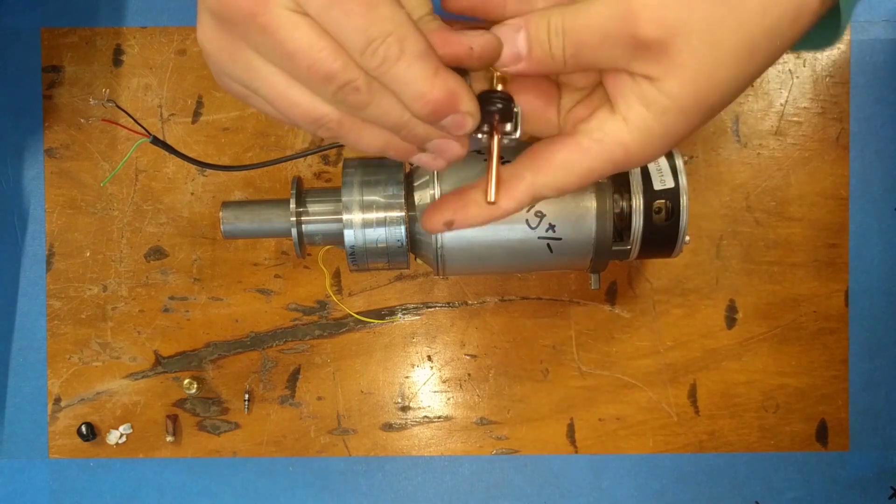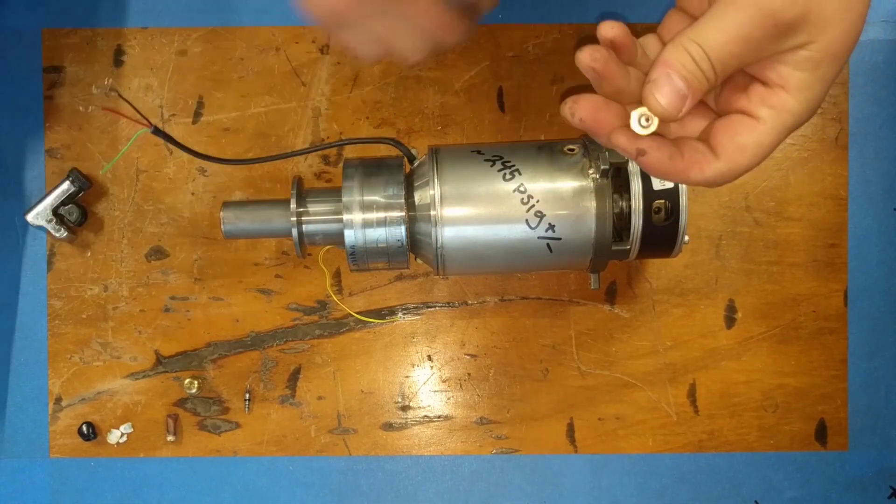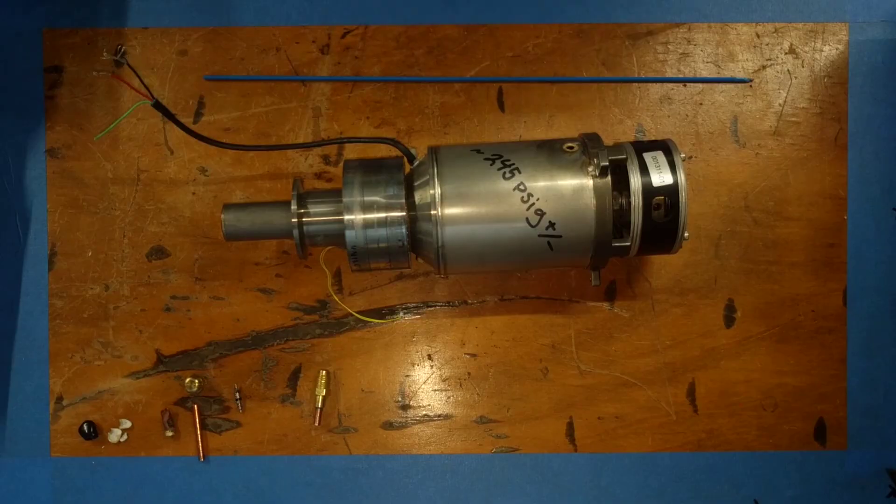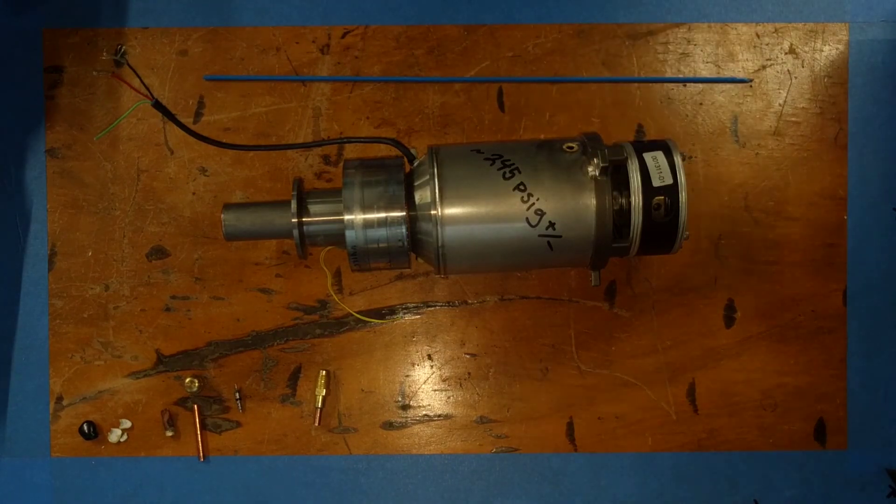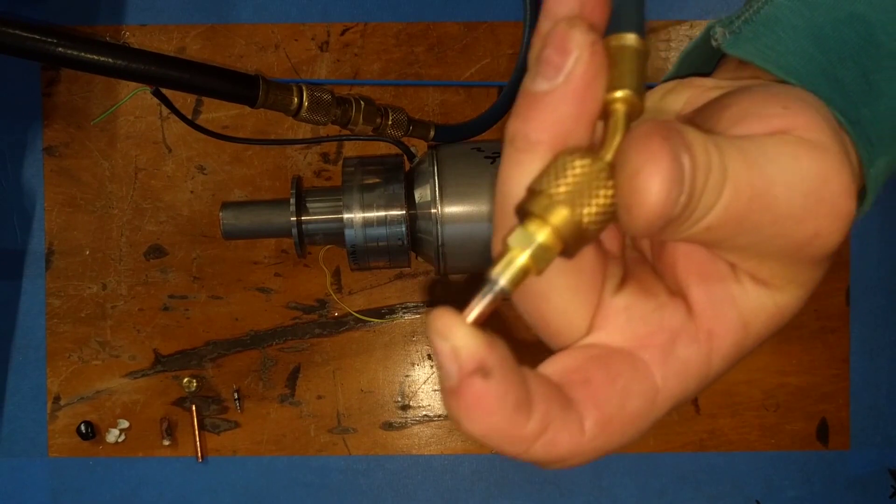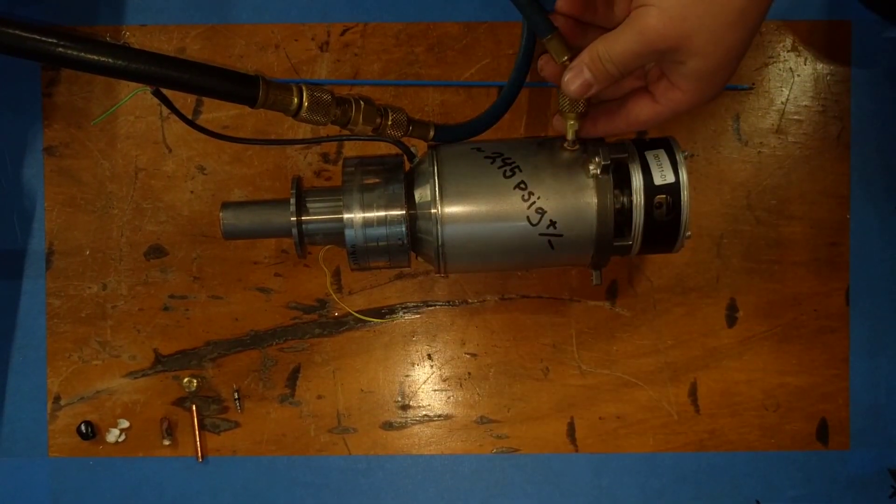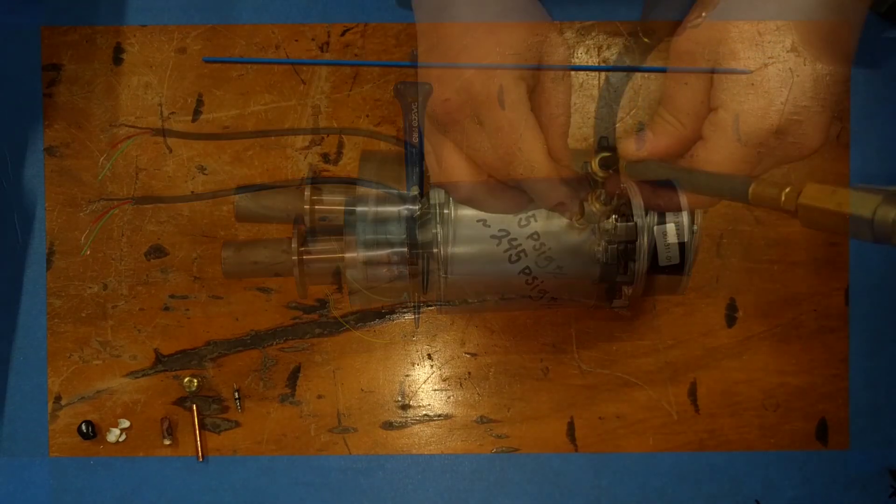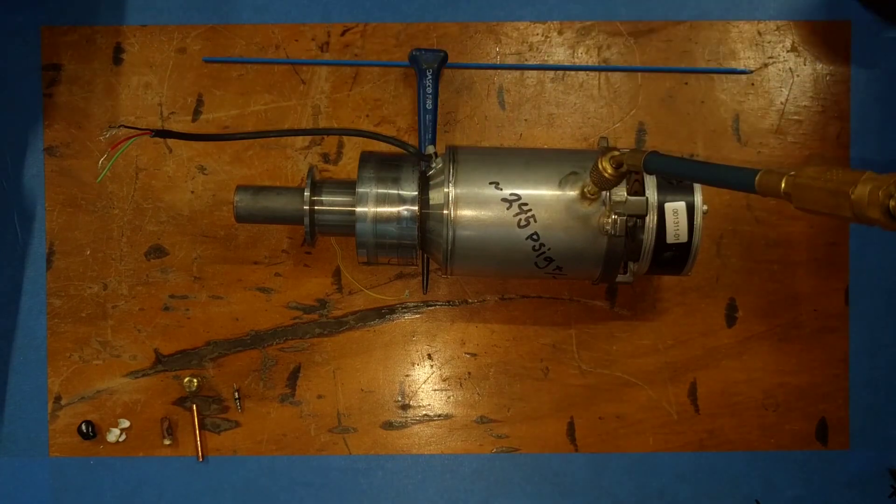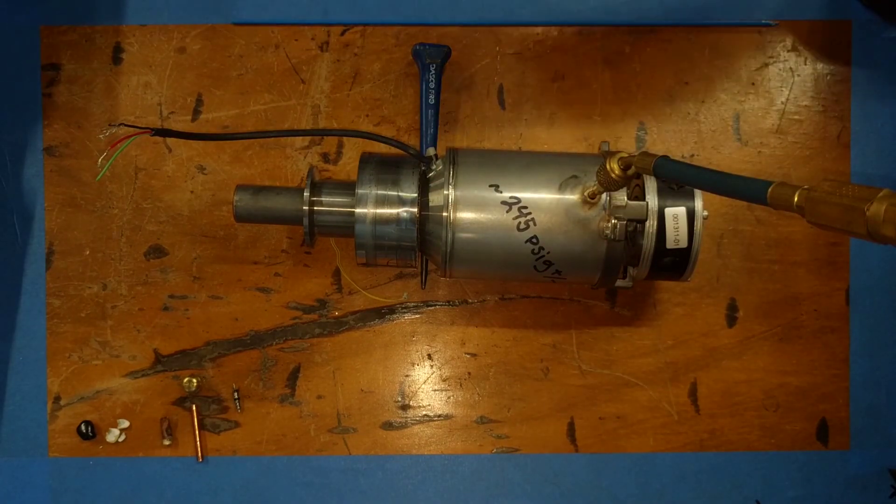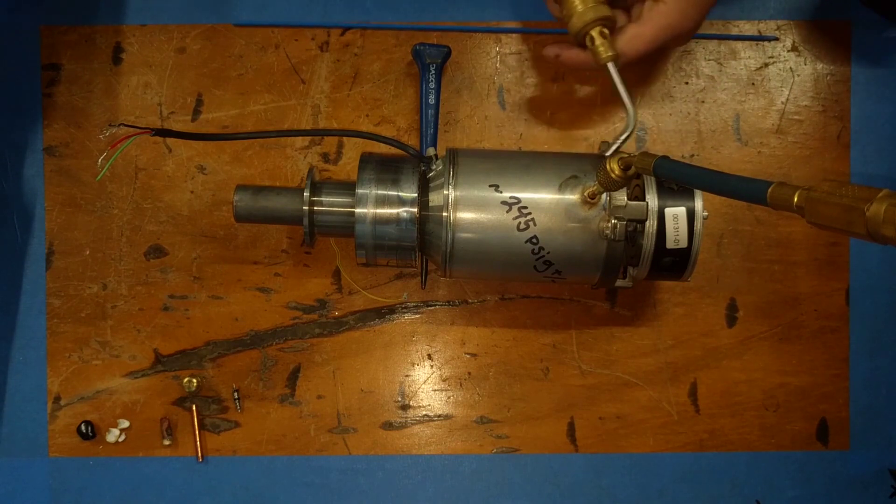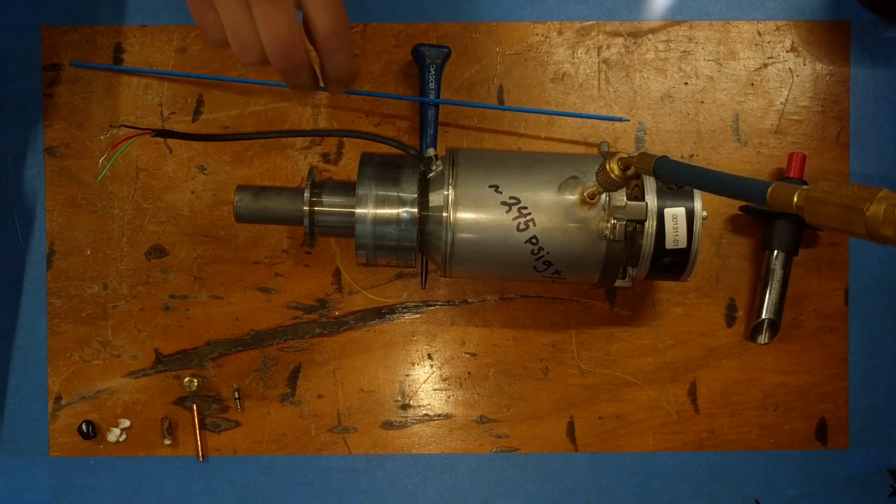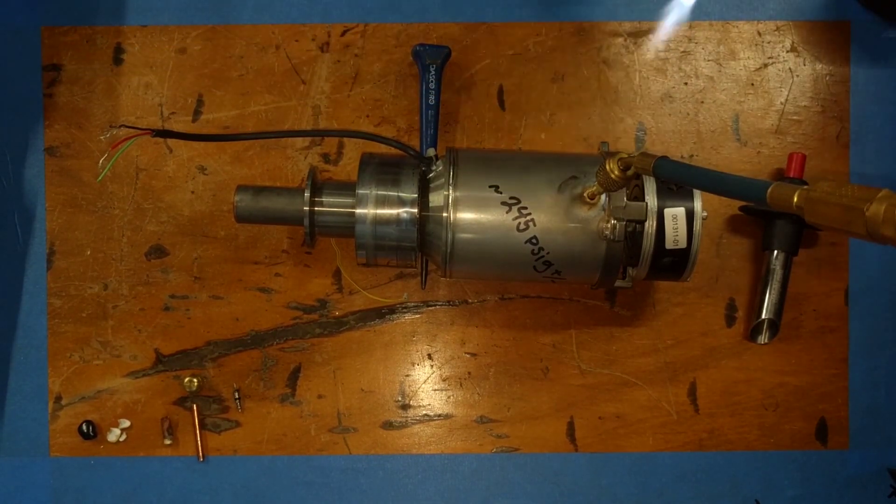That's the braising rod - it's Safety Silv 45, 45% silver, flux coated. Our purge gas is going to be argon today. We're going to flow about 5 to 10 SCFH of argon. You can use nitrogen, doesn't really matter, it just needs to displace oxygen. The only reason I picked argon is it's heavy, so it's going to sit in the bottom of this vessel.